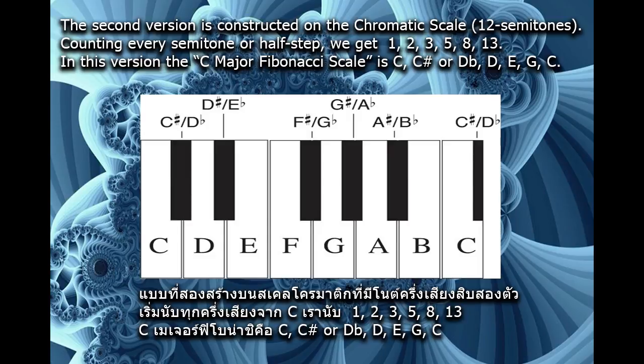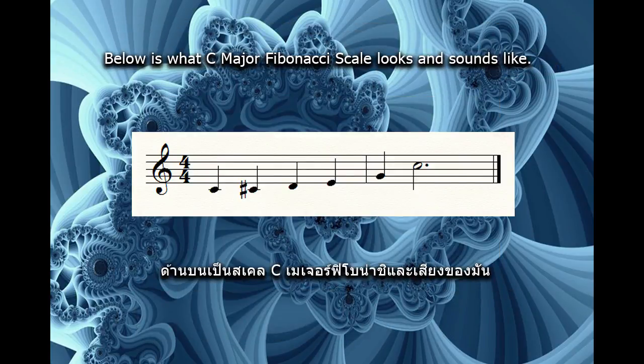In this version, the C major Fibonacci scale is C, C sharp or D flat, D, E, G, C. Below is what the C major Fibonacci scale looks and sounds like.